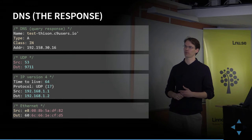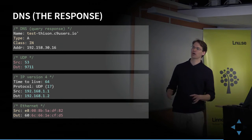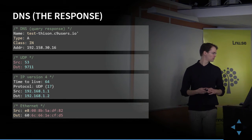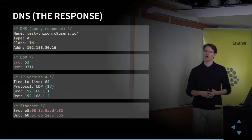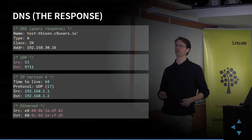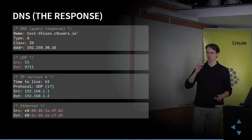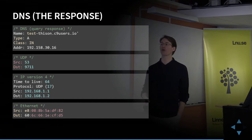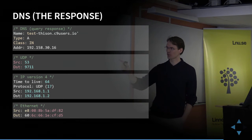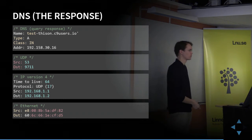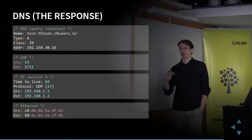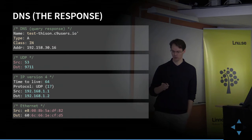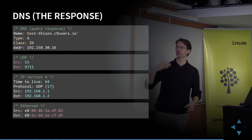I could specify the IP address directly in the URL instead of the domain name, but if this web server hosts multiple domain names — like test-tyson.c9users.io and test.someoneelse.c9users.io — it won't know which one I'm requesting and will fall back to a default, which could cause problems. That's why using the fully qualified domain name matters.